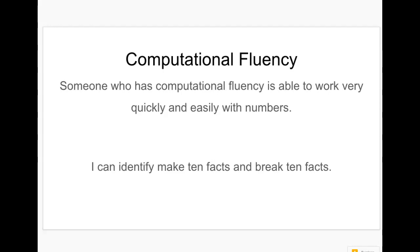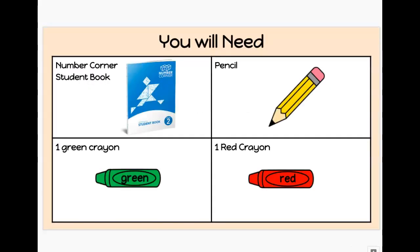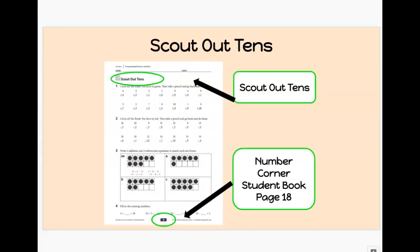Here's what you'll need today. You will need your Number Corner student book. It's blue on the top and white on the bottom. It says Number Corner right up here. You will need a pencil, one green crayon, and one red crayon. We will be practicing our computational fluency on page 18 in your Number Corner student books.